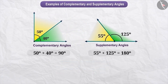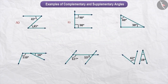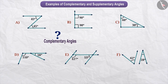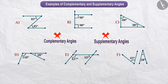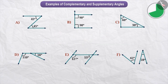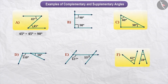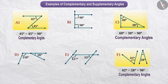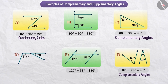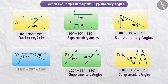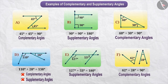Now, if you have understood the concept of supplementary and complementary angles, can you tell among the given figures which are examples of complementary and supplementary angles? Are there any figures which are neither complementary nor supplementary? Pause the video and try. In figures A, C, and F, the sum of angles is 90 degrees, so those angles are complementary to each other. In figures B and E, the sum of angles is 180 degrees, so those angles are supplementary to each other. The addition of angles in figure D is 138 degrees, so they are neither complementary nor supplementary.